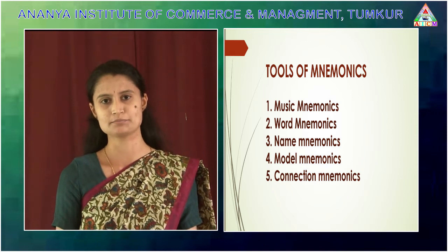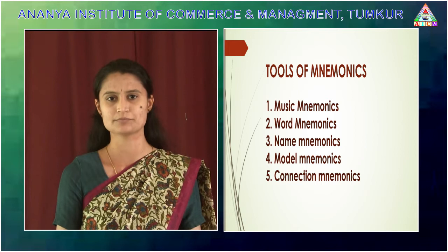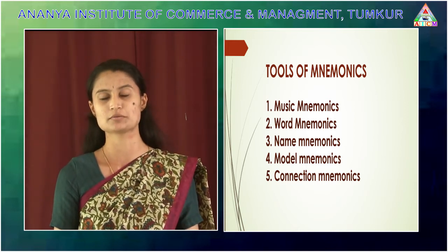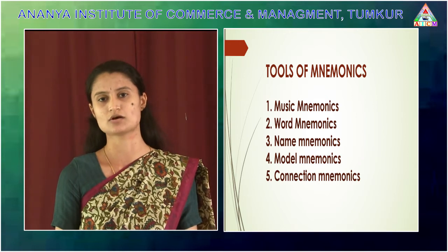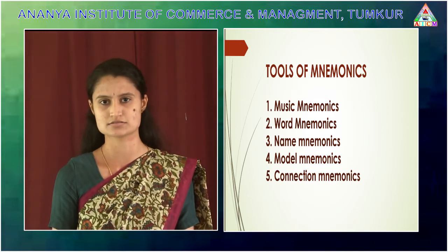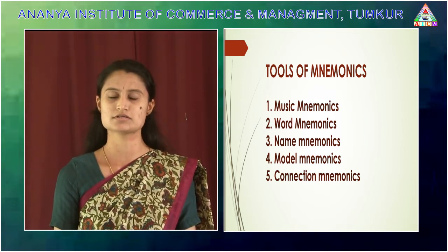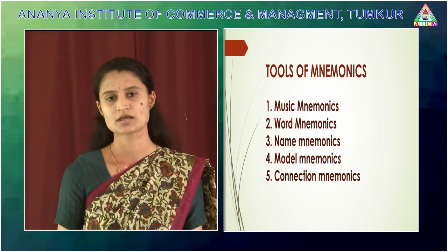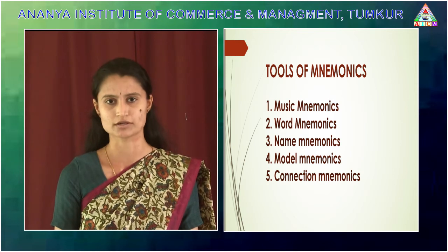For example, for kids who are aged 3 to 5, it is very difficult for them to remember A, B, C, D — all 26 letters. So they can remember this by singing the A, B, C, D song. This is an example of music mnemonic.